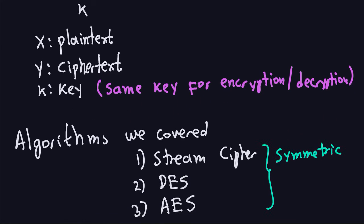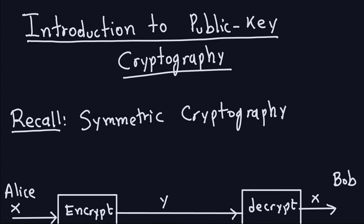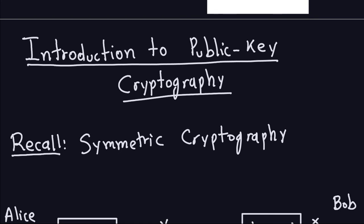The algorithms we've covered so far that use the same key for encryption and decryption are: the stream cipher, which we saw at the beginning of the modern cryptography videos; DES, the Data Encryption Standard; and the Advanced Encryption Standard — all symmetric algorithms. So everything we have done up to now is symmetric cryptography. From now on we will look at asymmetric cryptography, also called public key cryptography — they are exactly the same thing.